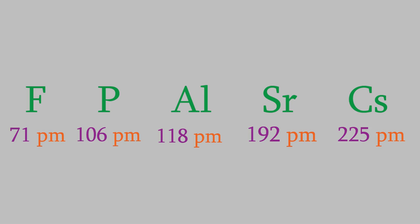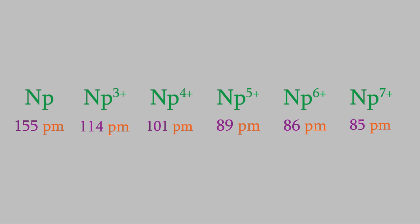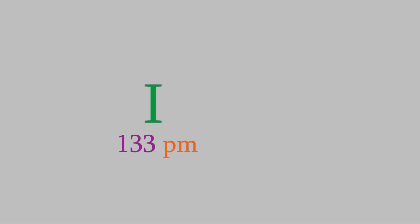Now, what happens when we create ions instead of neutral atoms? For example, suppose we have a neptunium atom, which has a radius of 155 picometers. In order to create a cation, we have to remove electrons. As you might expect, when we remove electrons, the radius of the ion decreases. So in this series of neptunium ions, the radius decreases until it reaches 85 picometers for the neptunium plus 7 ion. The reverse is true when we make anions — we do that by adding electrons to an atom. So for example, the radius of an iodine atom is 133 picometers, but when we add an electron to it, the radius of an I minus ion is 206 picometers.